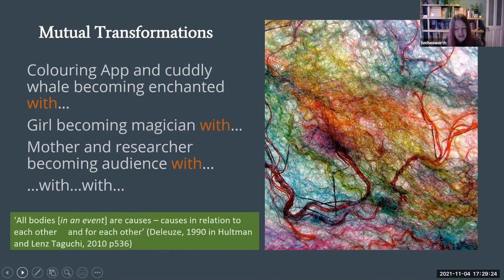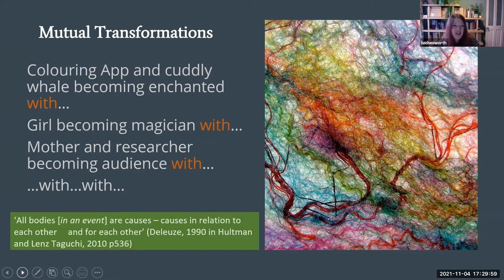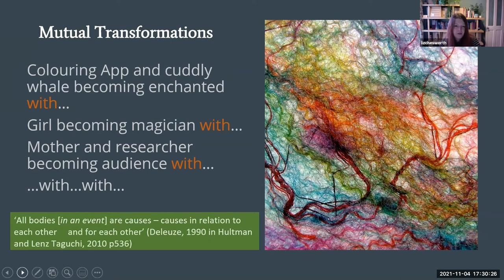The magic trick is something co-composed within this dynamic assemblage that includes Anna as the girl, but also the tablet, the app, the multiple roles played by Anna's mother, the researcher, the researcher's camera, the darkness of the room, and the cuddly whale that plays a really important role in the trick. Within this entanglement, everyone and everything is transformed — and it's that mutual transformation that creates the magic trick. The colouring app and the cuddly whale suddenly acquire very different meanings; the purposes of the app are transformed as it interacts with the cuddly whale to become enchanted as part of the trick.